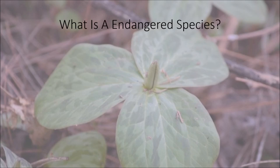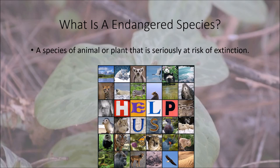The first term you've probably heard most often is an endangered species. What does it mean to be an endangered species? It's basically an organism, a plant, or an animal that is seriously at risk of extinction. We'll talk a little bit later about what the term extinct means.